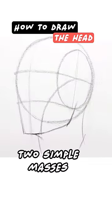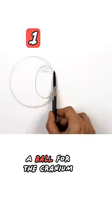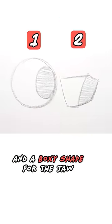Without the details, the head is just two simple masses, a ball for the cranium and a boxy shape for the jaw.